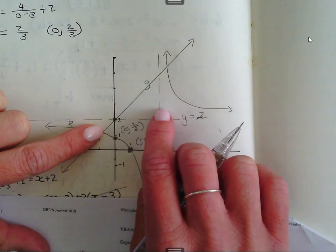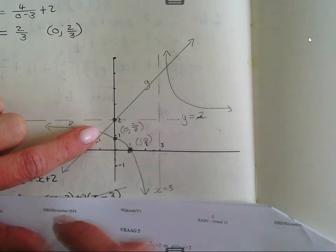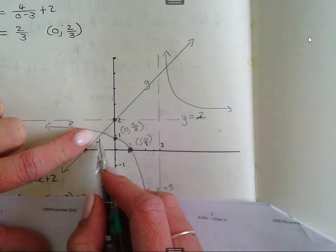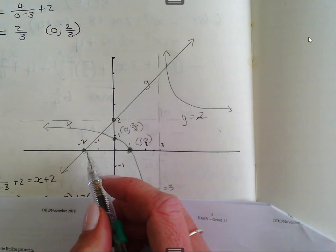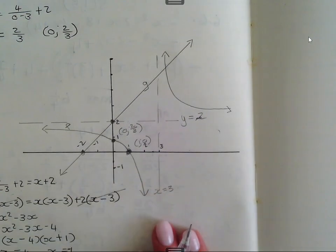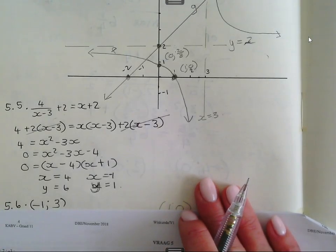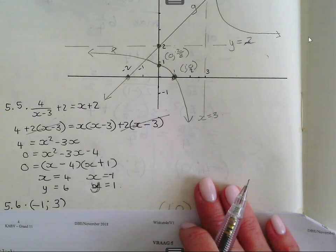En dan moet jy nou net bepaal, is hulle ingesuit of is hulle uitgesuit. Nou omdat hulle net vraag vir kleiner as, gaan jy nie minus 1 kan insuit nie. Want by kleiner as is die grafieke gelijk aan mekaar. So dit moet een ronde haakie wees, en die asomtoot, sal jy onthou, is altyd uitgesuit.